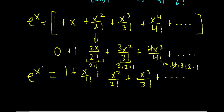So we're able to show, just by taking the derivatives, that these two have the same derivative — the derivative of each side is itself. Just as an extra way to really emphasize it: this infinitely long polynomial is e to the x.